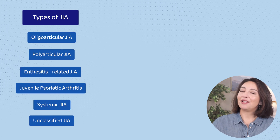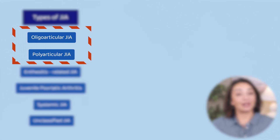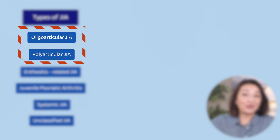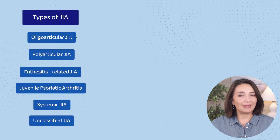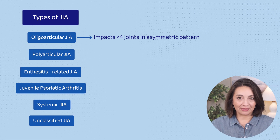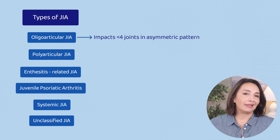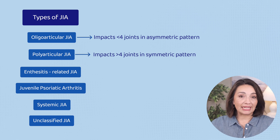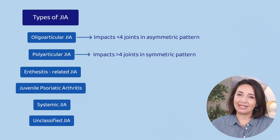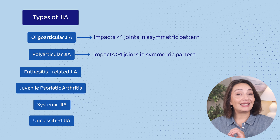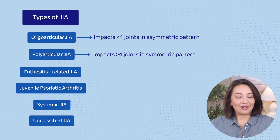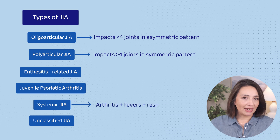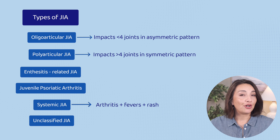There are different types of JIA. For simplicity, I'll be talking mostly about the oligoarticular and polyarticular types and will use the term JIA to discuss both. Oligoarticular JIA only impacts a few joints in an asymmetric pattern — think a right knee, a left ankle, and a right knuckle. Polyarticular JIA affects more than just a few joints and tends to be symmetric, like both wrists or both knees. I also want to highlight that systemic JIA is something else entirely — kids get very high fevers and rashes, and it's considered an auto-inflammatory condition as opposed to autoimmune.